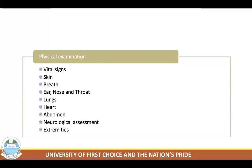Complete vital signs including core body temperature should be obtained initially and throughout the emergency department stay. Hyperthermia can be characteristic of poisoning with salicylates, anticholinergics, monoamine oxidase inhibitors, and occasionally after intoxication with PCP, LSD, or cocaine. Life-threatening malignant hyperthermia may occur following drug overdose. Hypothermia can occur due to cold exposure, hypoglycemia, or overdose of sedatives — especially barbiturates, ethanol, carbamazepine, narcotics, and phenothiazines. Bradycardia can occur with digitalis, cholinergic agents, beta blockers, and calcium channel blockers.